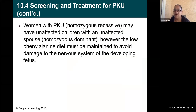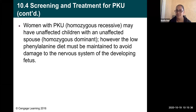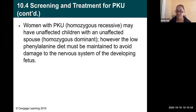Women with PKU are homozygous recessive — they have two recessive alleles for this disorder. They may have unaffected children if the person they've chosen to have children with is homozygous dominant. However, the low-phenylalanine diet must be maintained to avoid damage to the nervous system of the developing fetus. Women with this disorder could have normal children as long as they keep their diet and their partner doesn't have it.